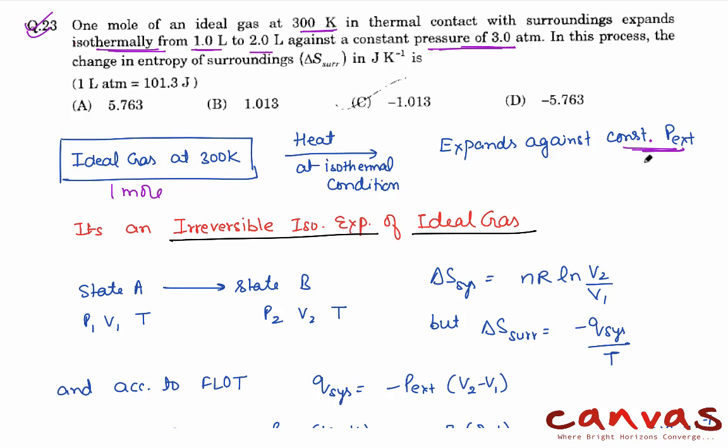We provide some heat so it expands and the temperature remains constant and the external pressure is also constant. Now you know that in a reversible process, the external and internal pressures are infinitesimally close to each other. So when you are expanding against a constant external pressure, this part only confirms that it's an irreversible process. We have a case of irreversible isothermal expansion of ideal gas.